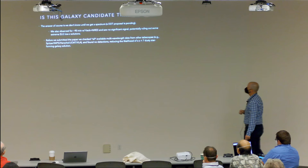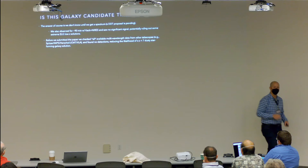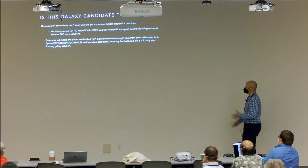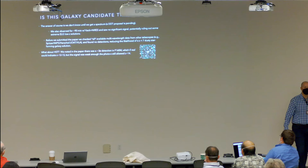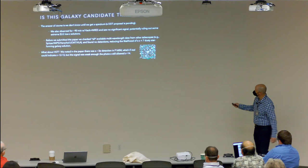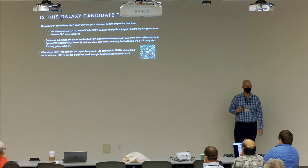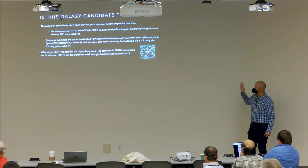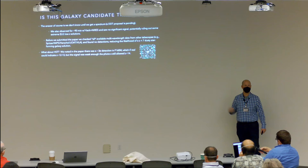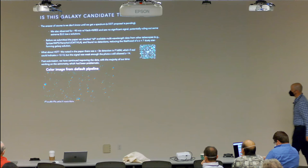Before submitting the paper we checked all available multi-wavelength data — Spitzer, Herschel, JCMT, VLA — and found no detections, reducing the likelihood of a low-redshift dusty star-forming galaxy solution. We also checked WFC3 F160W imaging and were surprised to see a ~3-sigma detection with a weird morphology. F160W extends slightly redder than F150W, and including this could indicate a redshift around 12–13, although the photo-z still preferred 14.